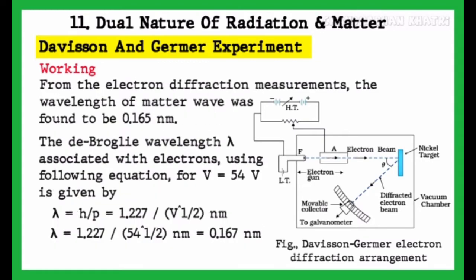From the electron diffraction measurements, the wavelength of the matter wave was found to be 0.165 nanometer.